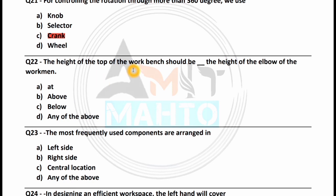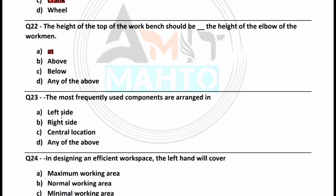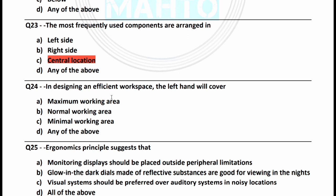The height of the top of the workbench should be at the height of the elbow of the workman — above, below, or none of the above. Option A, 'at,' is the right answer. The most frequently used components are arranged in: left side, right side, central location, or any of the above. The right answer is option C, central location. In designing an efficient workspace, the left hand will cover the maximum working area — option A is correct.